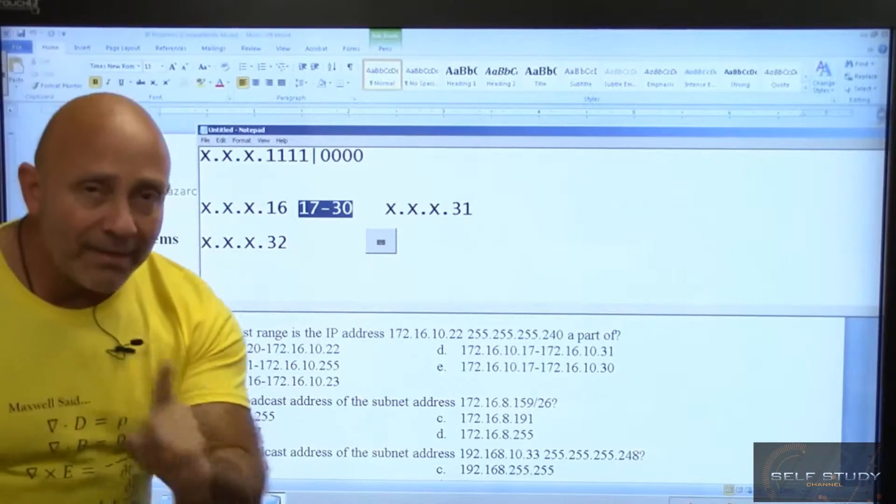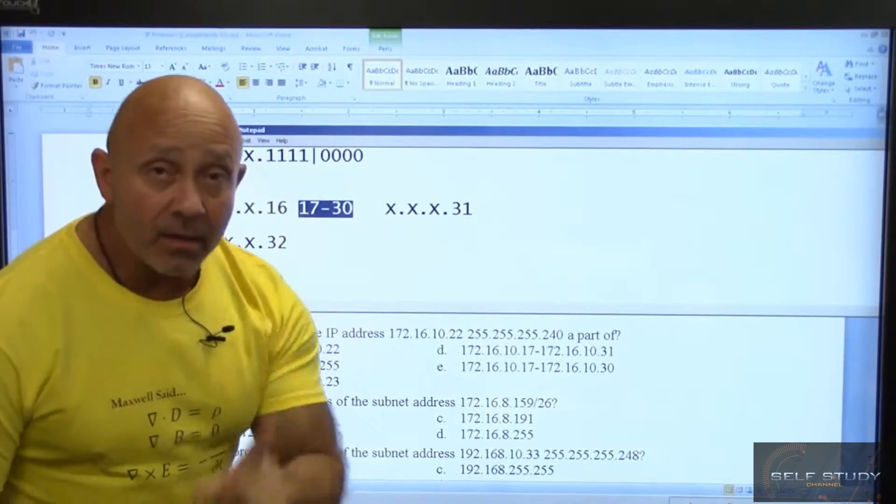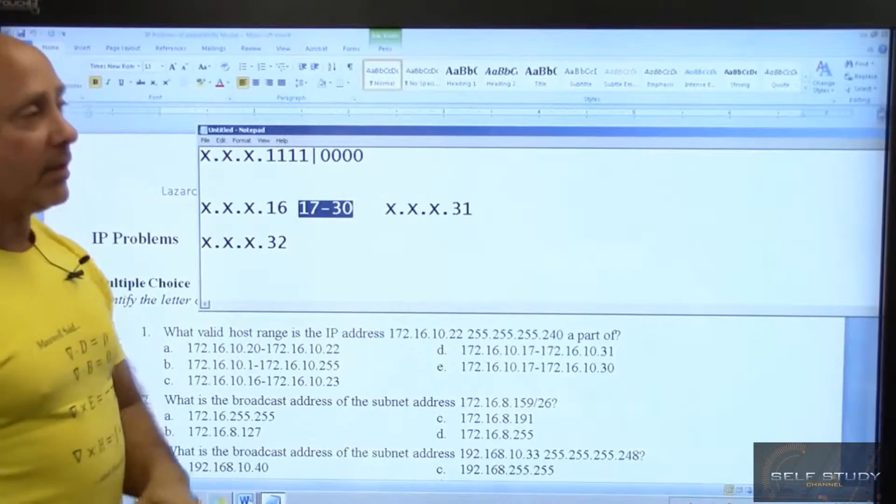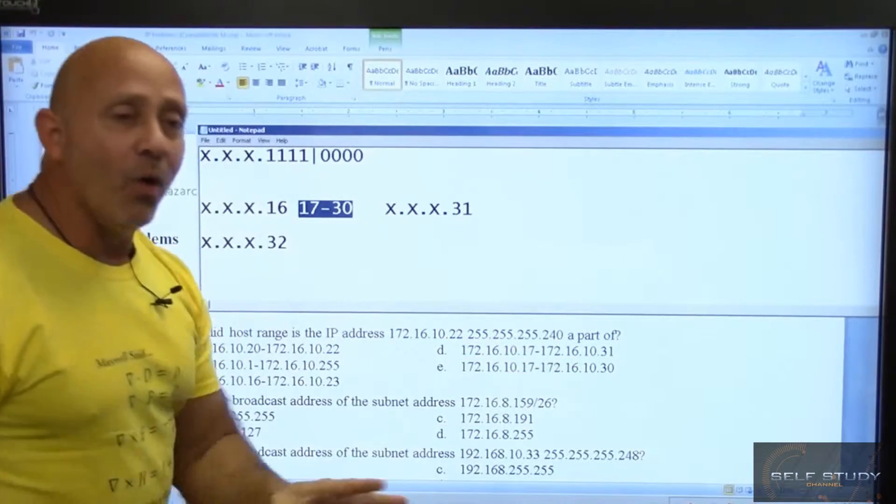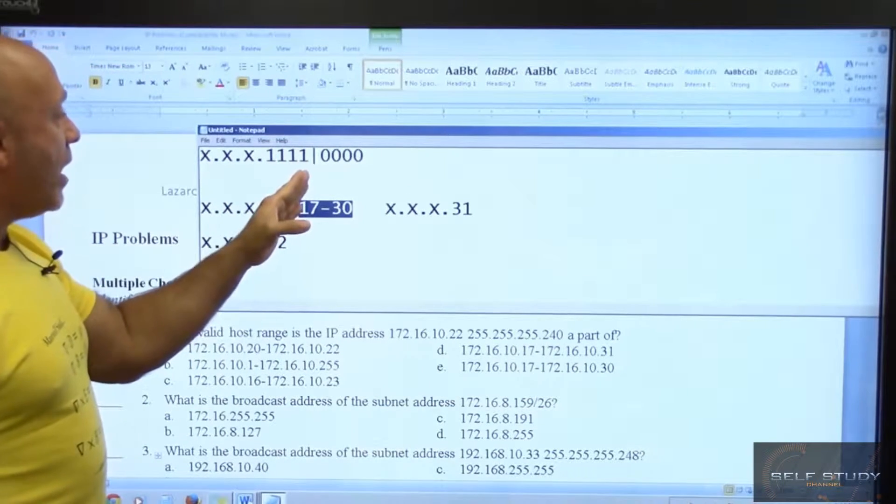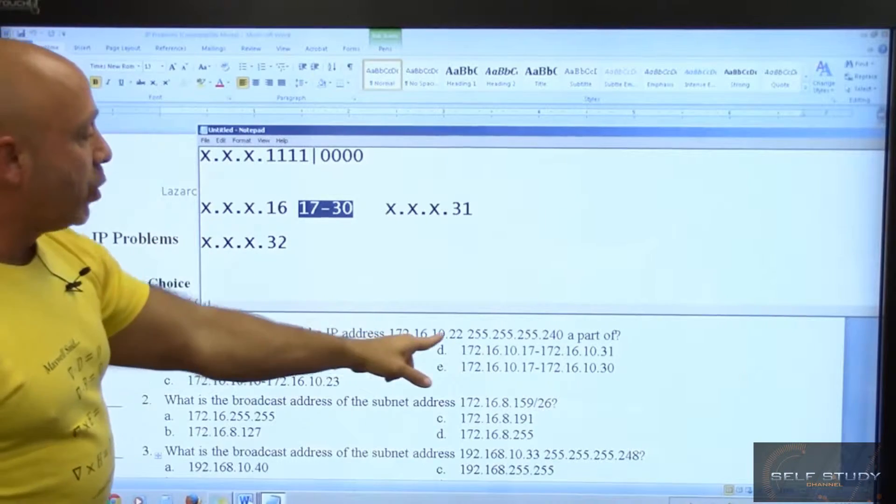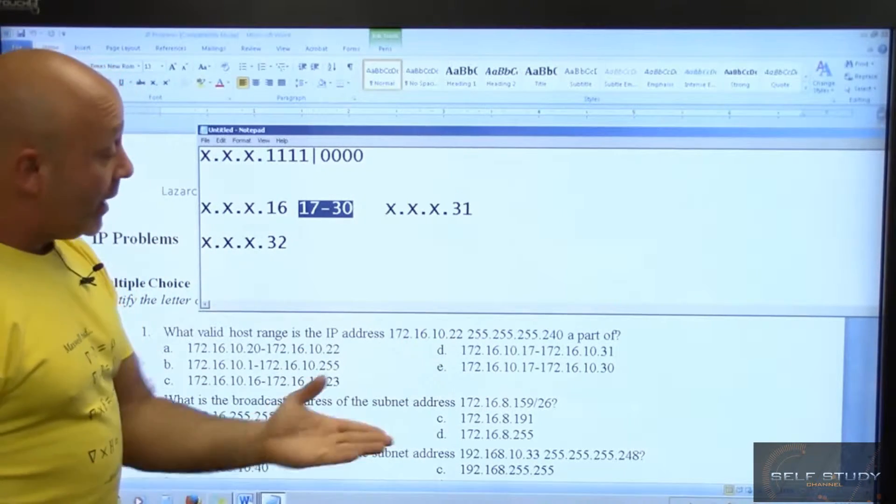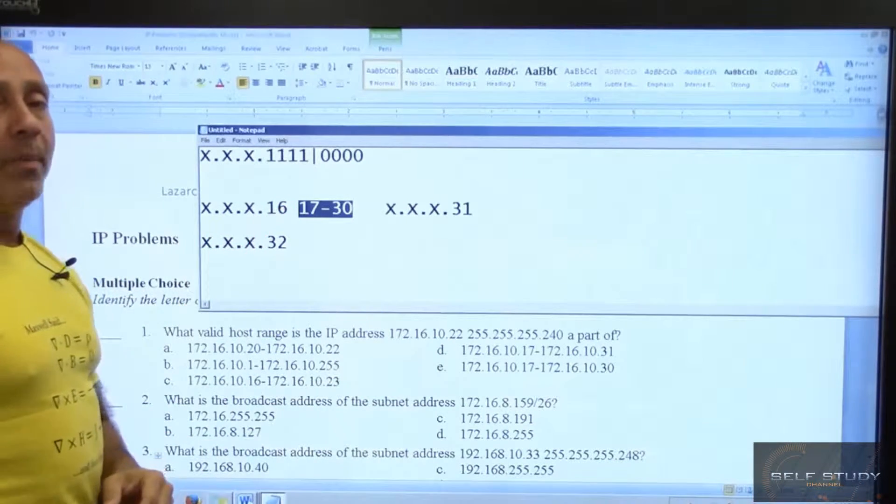That is how you do that. Again, what did I focus on? I focused on the mask because the mask told me where to draw that line. The mask told me where to draw the line, so once I draw the line I know what I increment by. So I increment till I get close to the number that I'm focusing on, which is in the fourth octet.